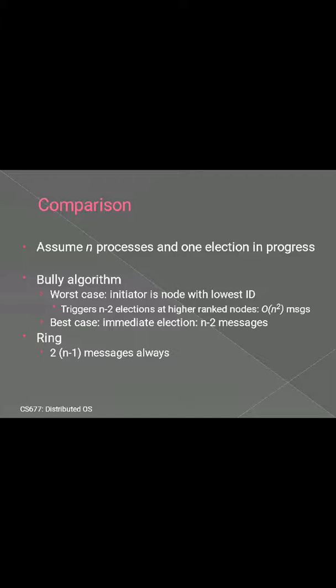As we have seen the bully and the ring algorithm, here is the comparison between both, assuming n processes and one election in progress. In the bully algorithm, the best case is when the initiator is the node with the lowest ID, resulting in n-2 messages for the election. In the ring algorithm, regardless of how many initiators there are, it always takes 2(n-1) messages. So this is all about the election algorithm in synchronization. Thank you.